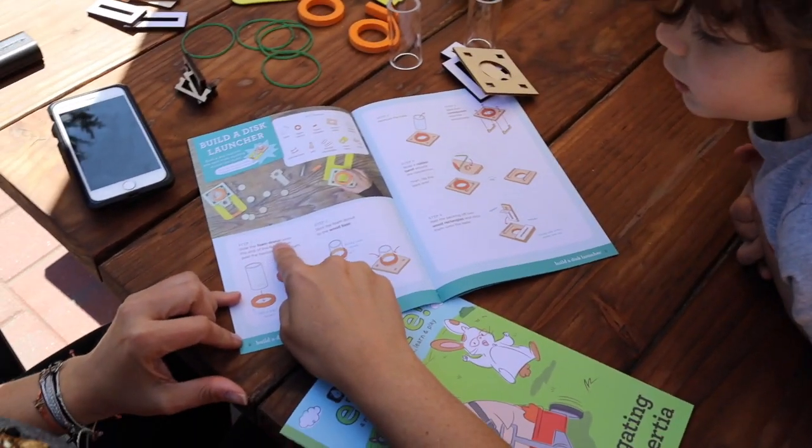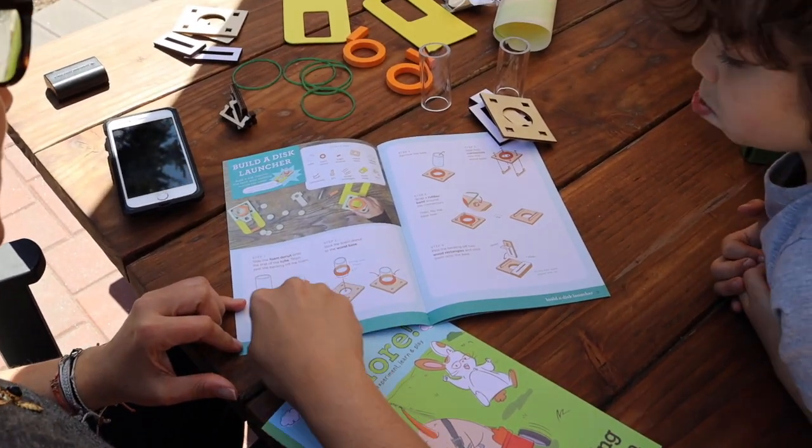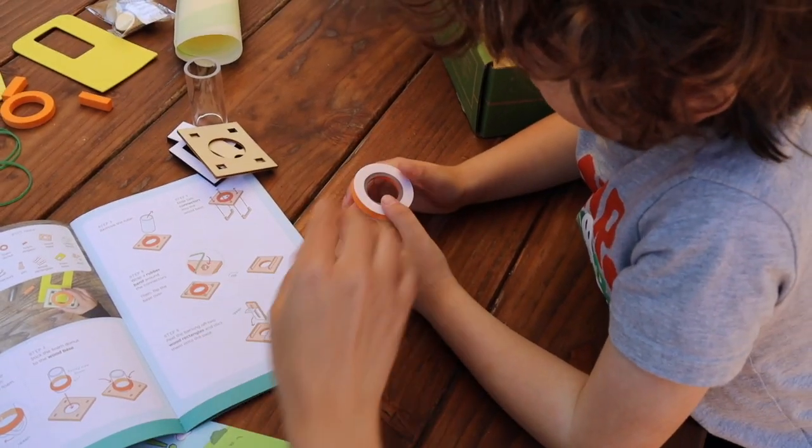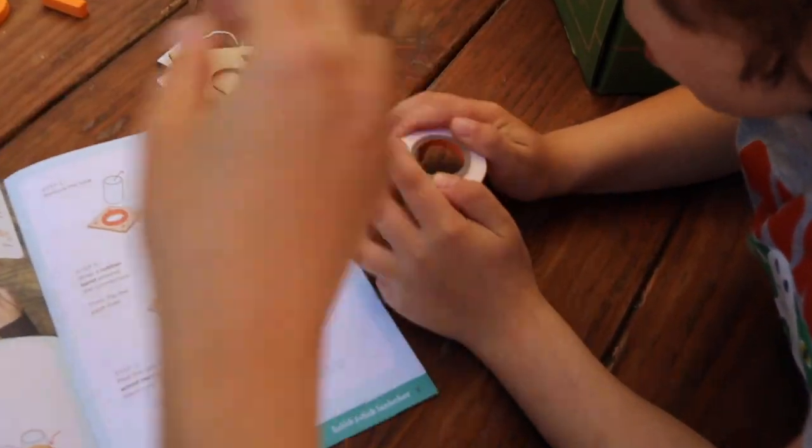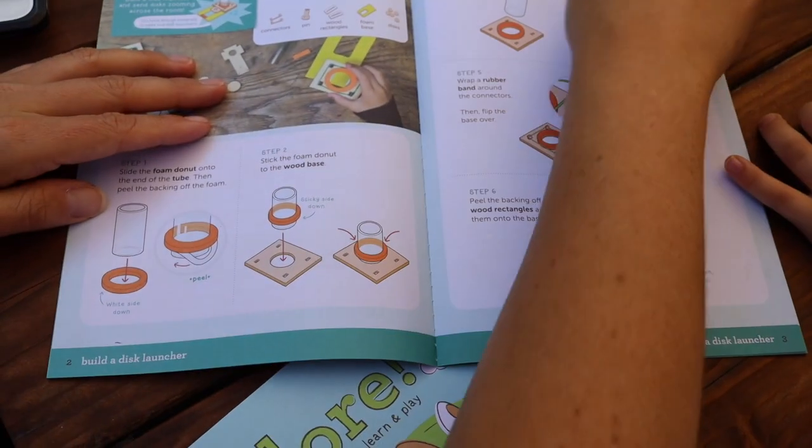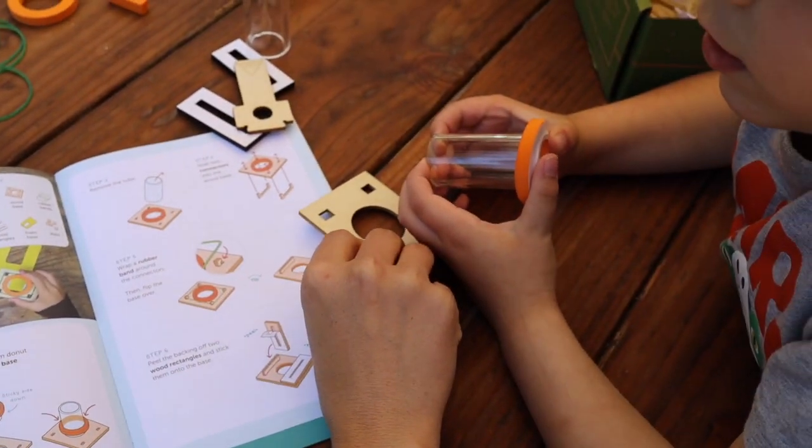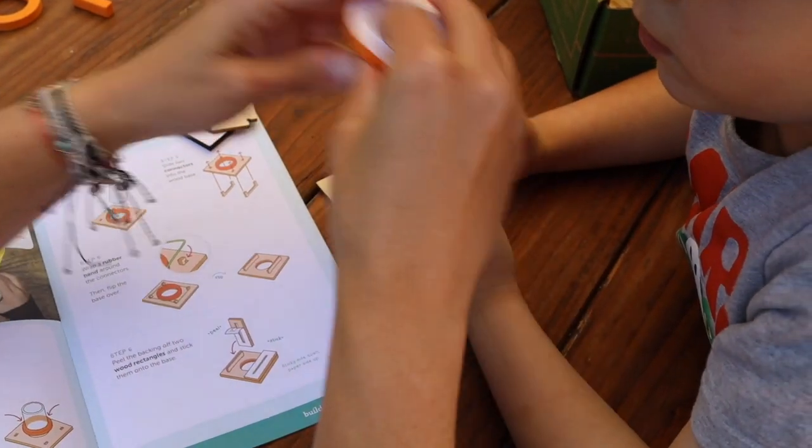Interesting green band. We're going to slide the foam donut onto the end of the tube, then peel the backing off the foam. Like that? Yep. Push it all the way in. And then stick the foam donut into the wood base. Like that? Does it matter? Oh, like this one? Yes. Like this, okay.